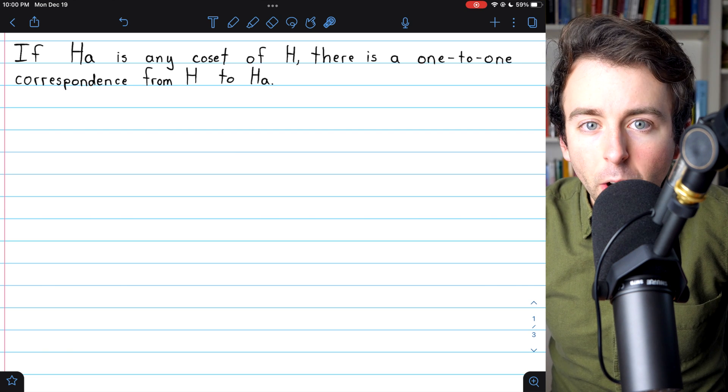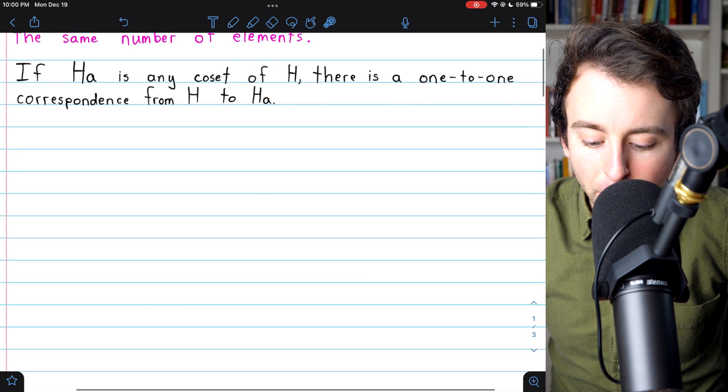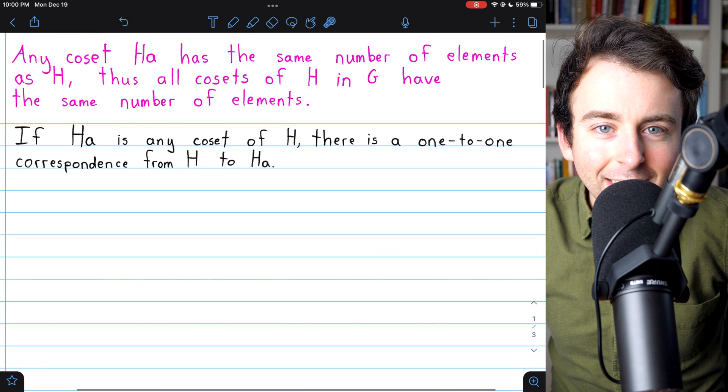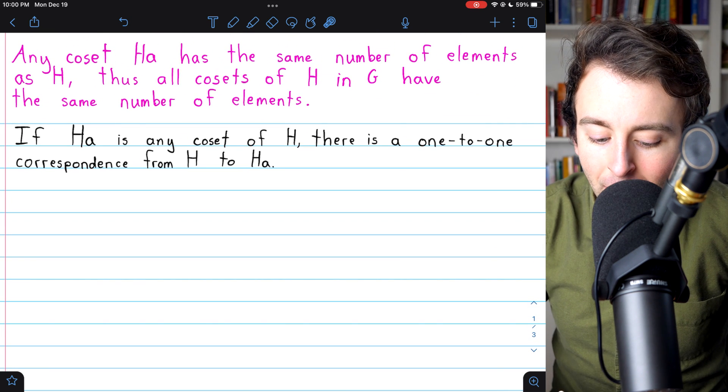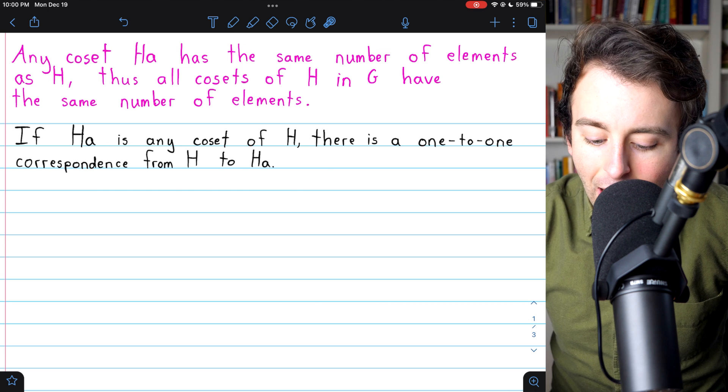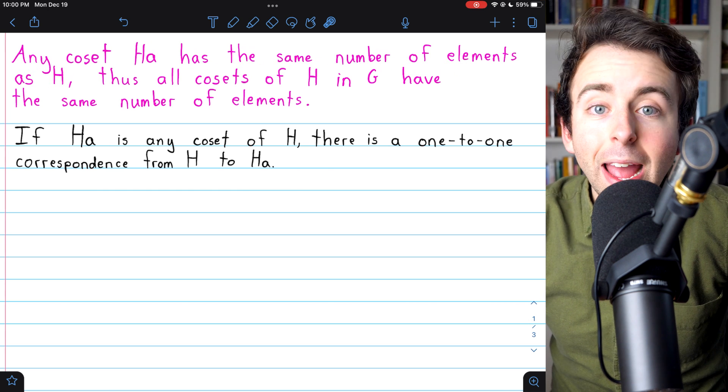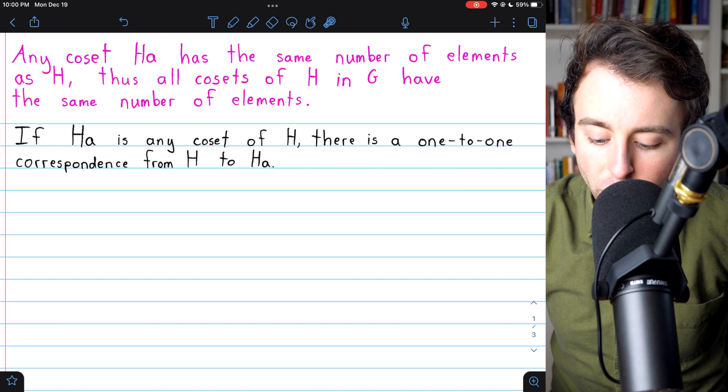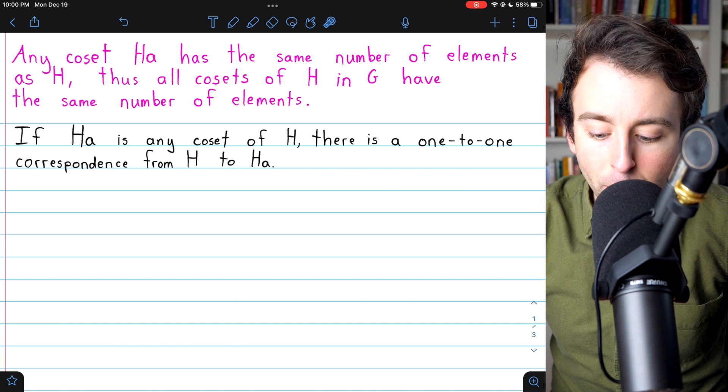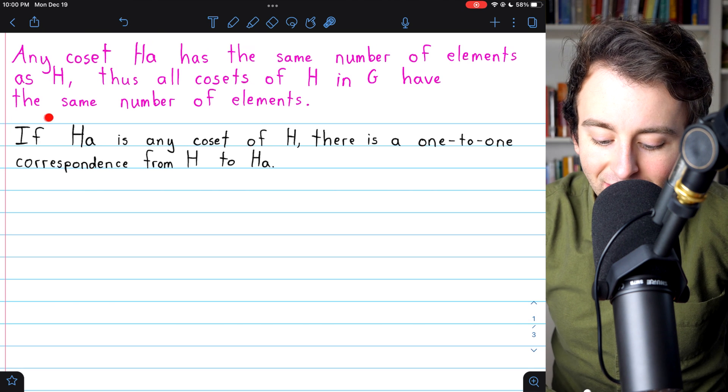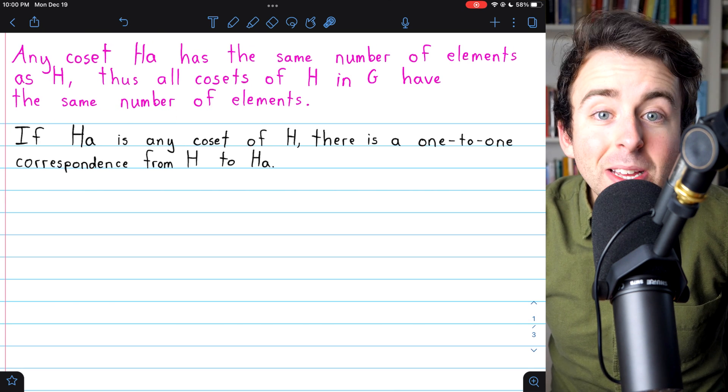This means that the subgroup and the coset have exactly the same number of elements. So importantly, what we're really proving here is that any coset HA will have the same number of elements as the subgroup H.